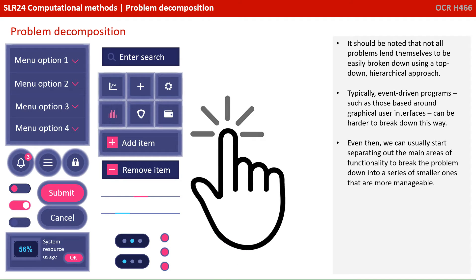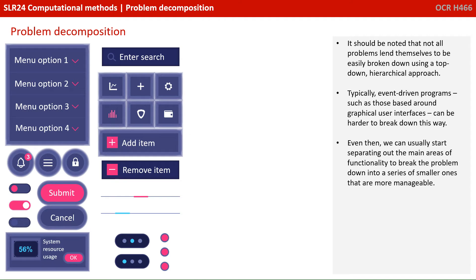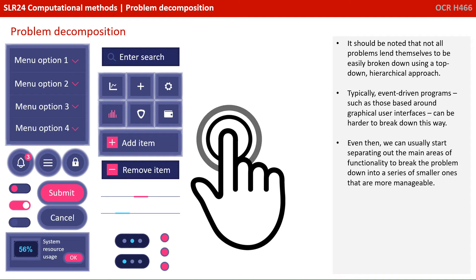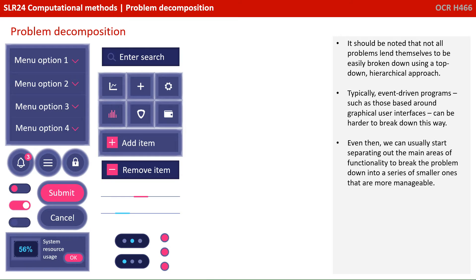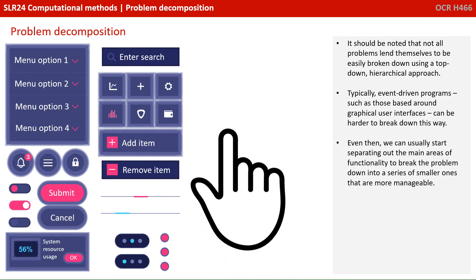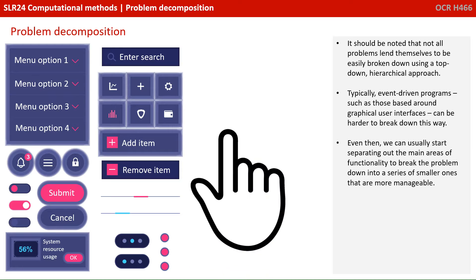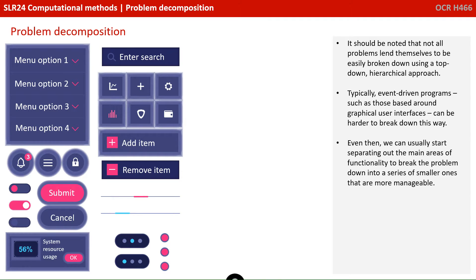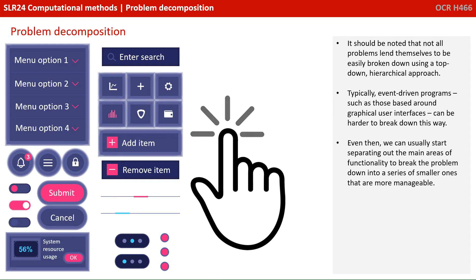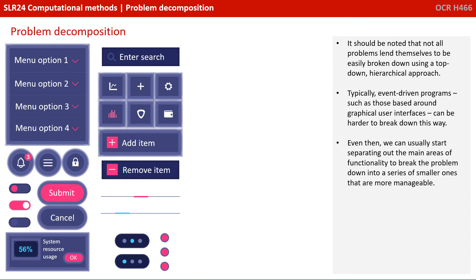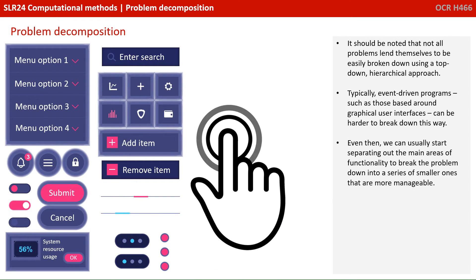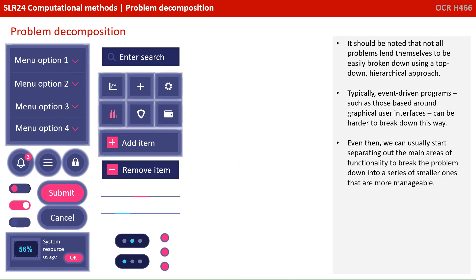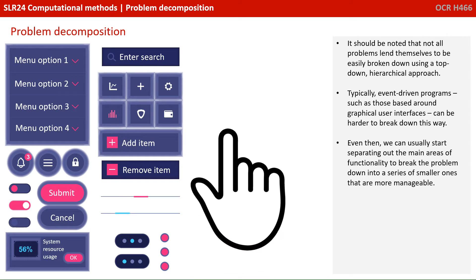It should be noted that not all problems lend themselves to being easily broken down using a top-down hierarchical approach. Typically, event-driven programs such as those based around graphical user interfaces can be harder to break down in this way. Even then, we can usually start to separate out the main areas of functionality to break the problem down into a series of smaller ones that are then more manageable to deal with.